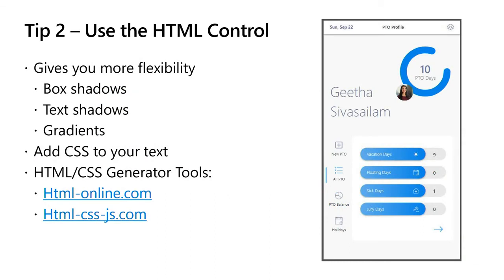The next tip is to use the HTML control. If you look at this app on the right — my friend Geetha actually created this — she's using the HTML control all throughout. These vacation days where it's filled in like that? That's the HTML control. If you look at the top, you see that kind of header that looks a little different than the standard Power Apps header — that little shadow at the end? That's called a box shadow, and that's using the HTML control.